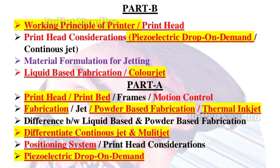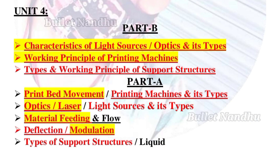The next unit covers all the concepts and new topics. In Unit 4 Part B, the characteristics of light source and optics are important. The types covered in Unit 4 include all major categories.